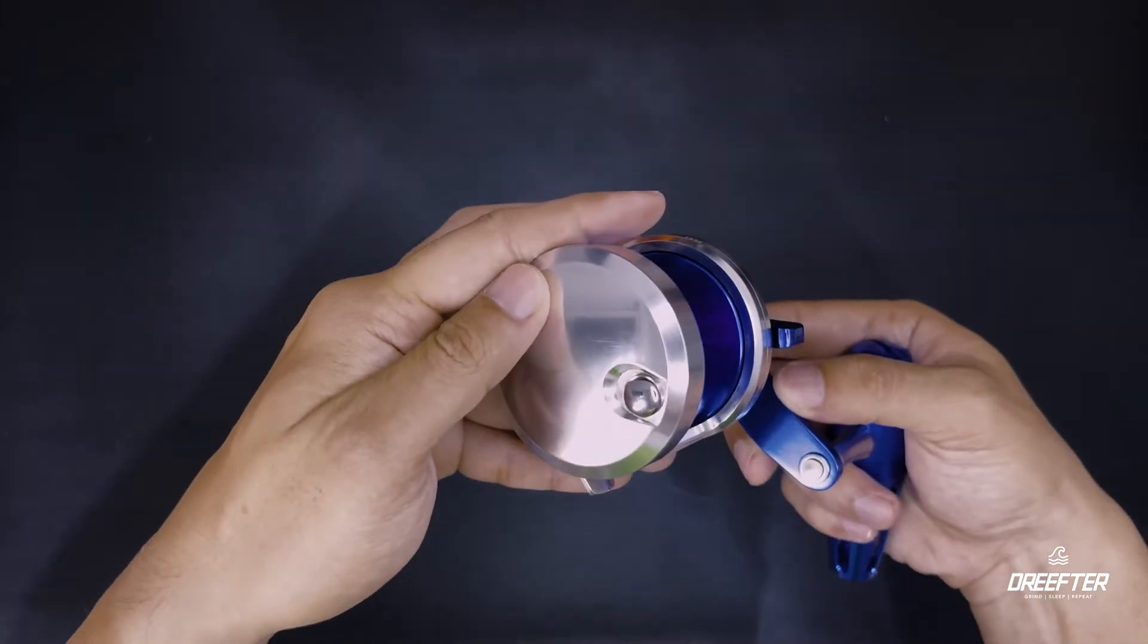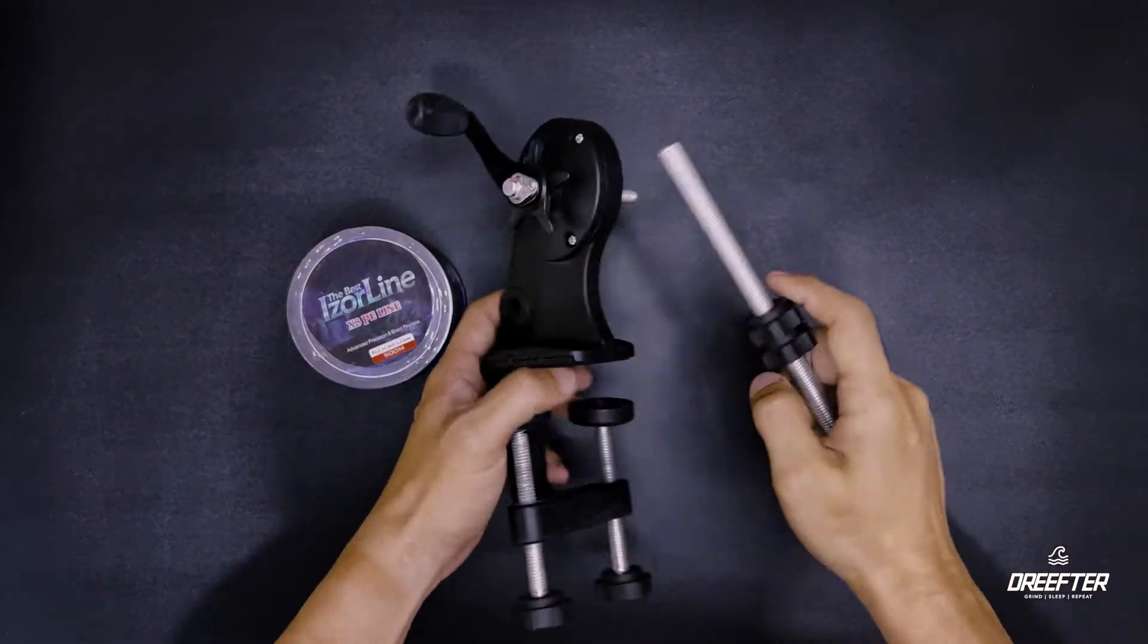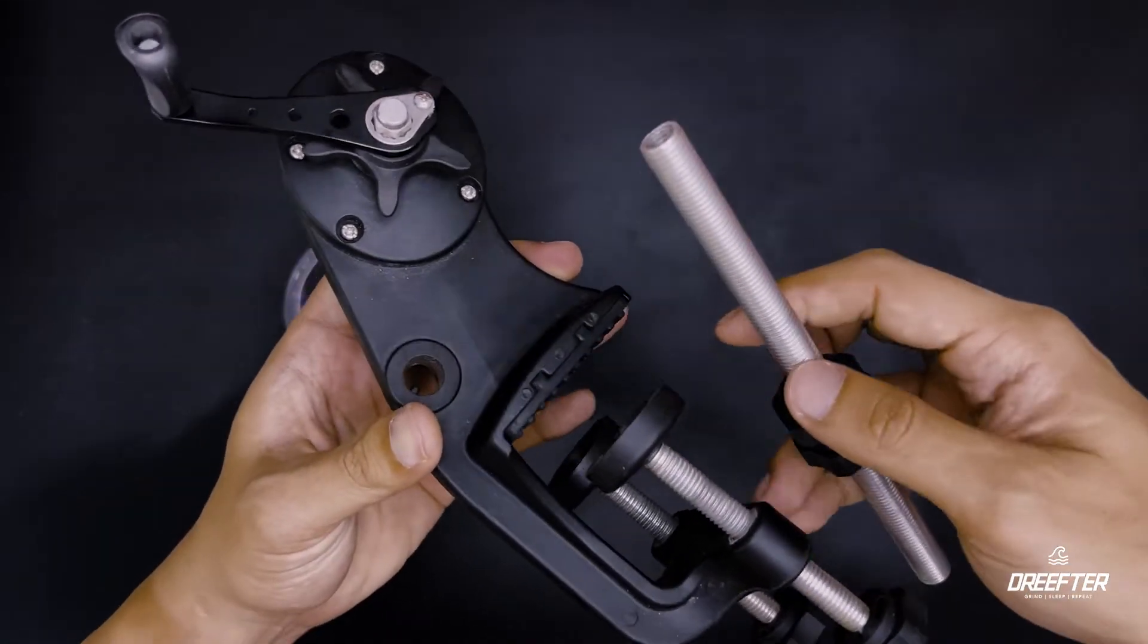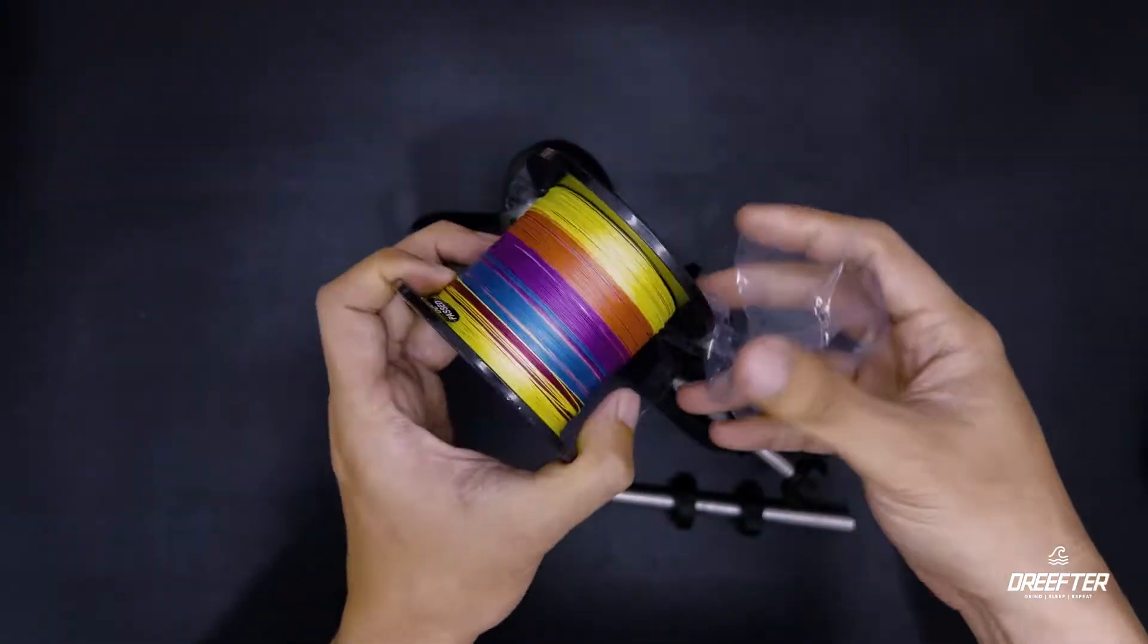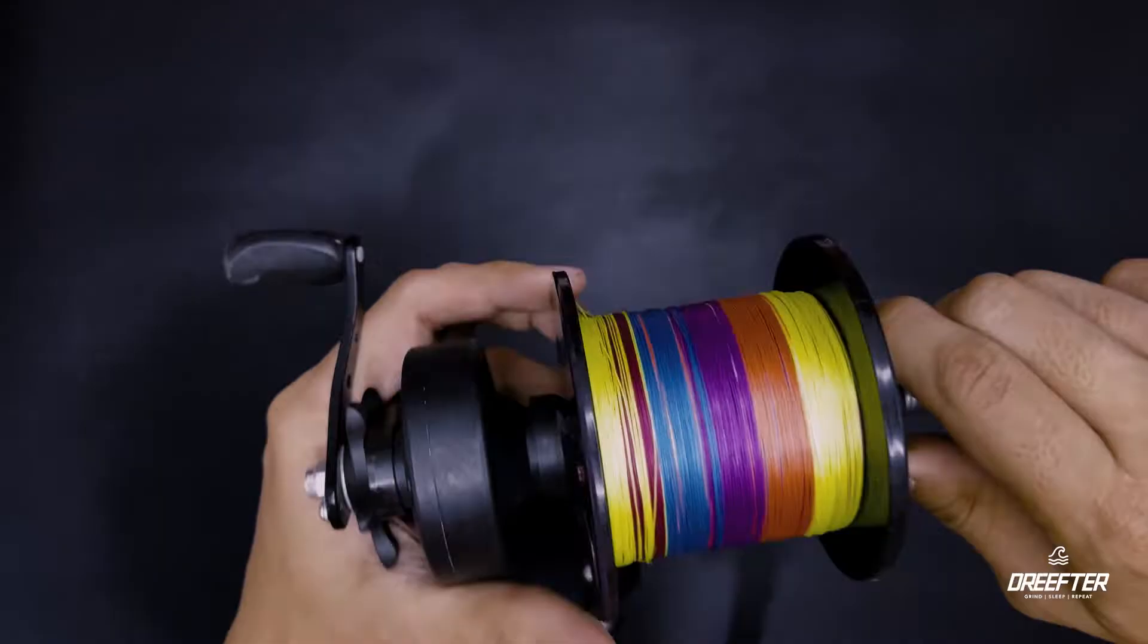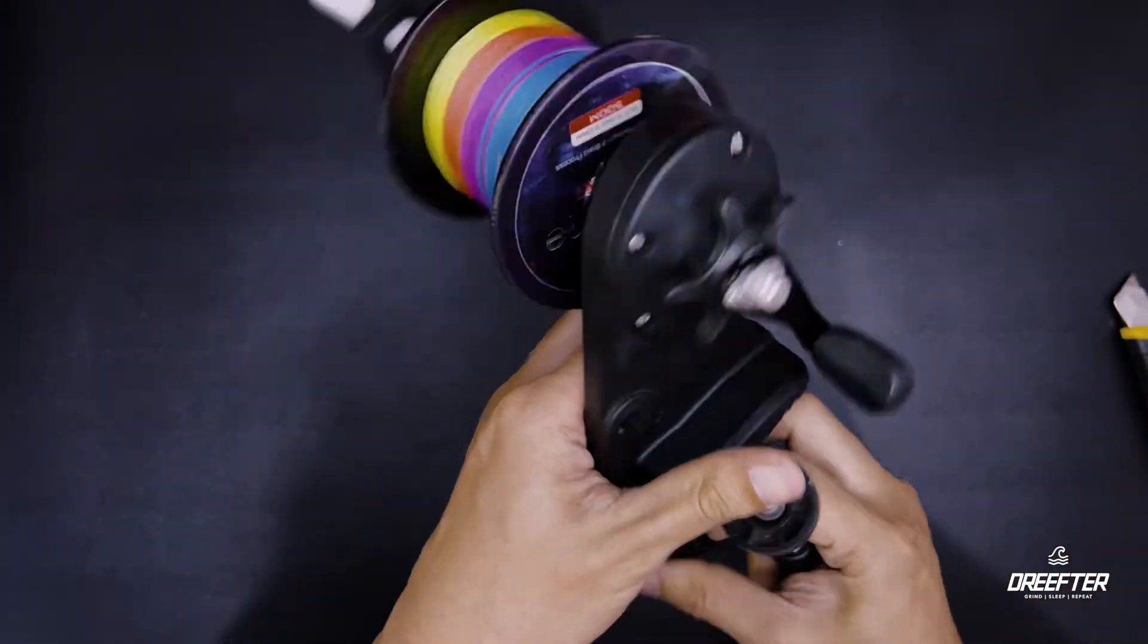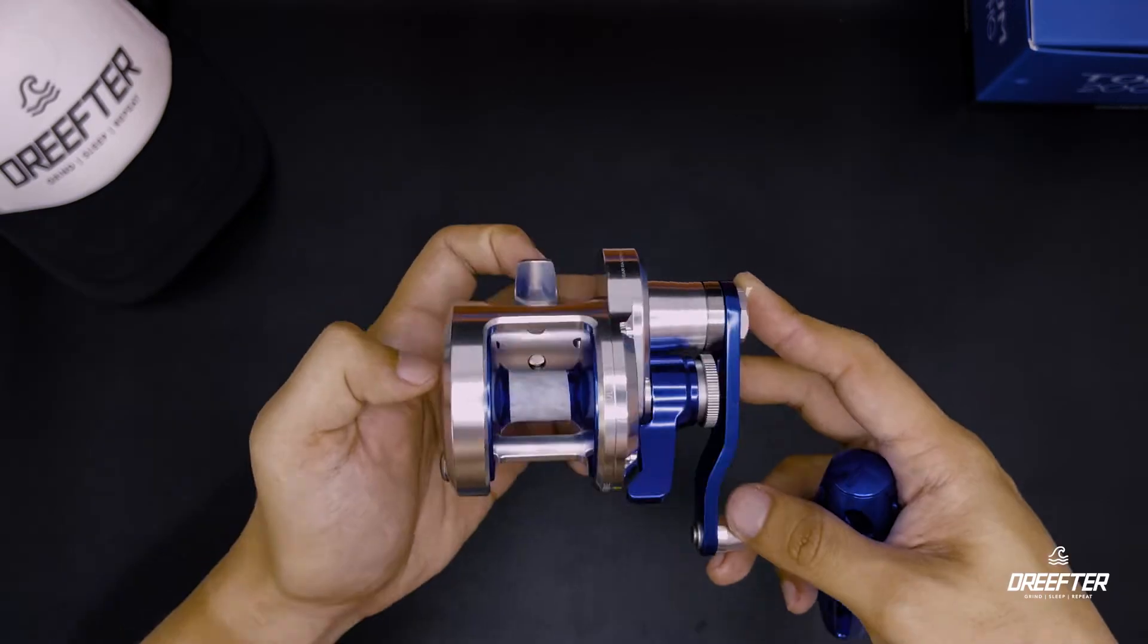So next guys, ay ispool na natin ang ating line gamit itong line winder na pinahiram sa atin kay Master Ender. Shoutout kay Master Ender at Master Paul at sa lahat ng members ng Isla del Fuego Anglers. But first, lalagyan ko muna ng tape yung reel natin para hindi dumulas yung line.